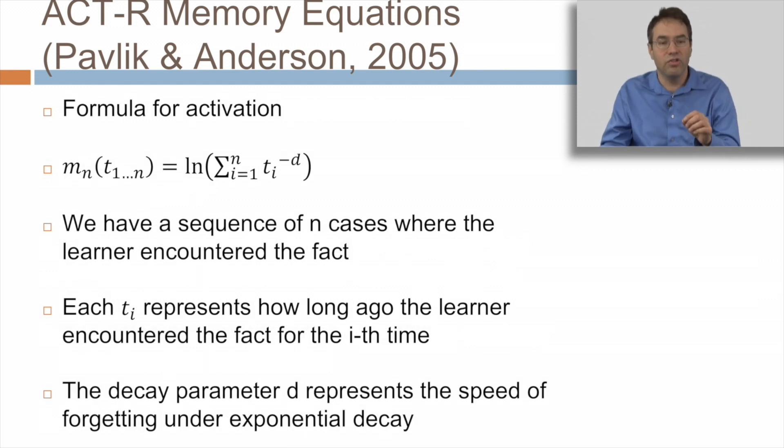The formula for the activation is represented by this formula, where we have a sequence of n cases where the learner encountered the fact. And each t of i represents how long ago the learner encountered the fact for the i-th time, how many seconds ago it was. And the decay parameter d represents the speed of forgetting under exponential decay. So in other words, based on the parameters of this model, we can infer how much will your memory decay over time, how rapidly will it decay over time.